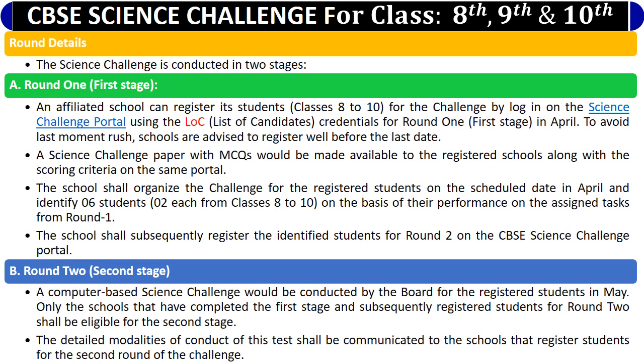The schools must organize the challenge for the registered students on the scheduled date in April and identify 6 students on the basis of their performance on the assigned task from Round 1. The schools subsequently register the identified students for Round 2 on the CBSE science challenge portal.